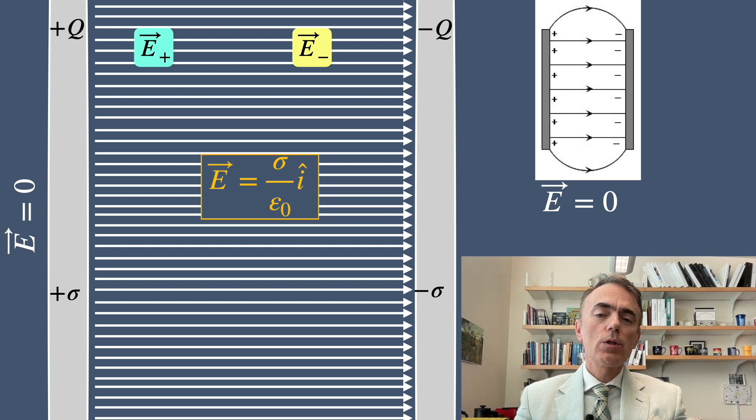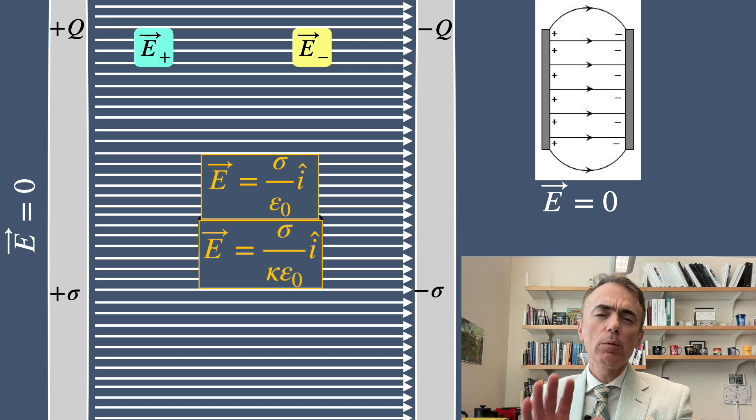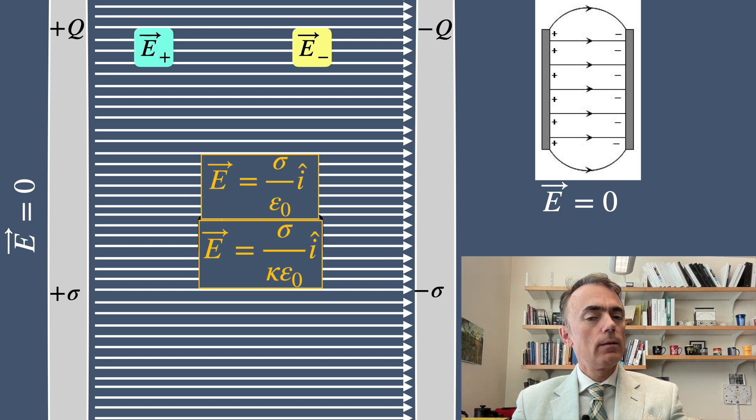These results are valid assuming that there is a vacuum between both plates. If there is any material inside, any medium like a dielectric, then this epsilon naught, there is a term that we need to multiply here but we'll talk about that later in this course.